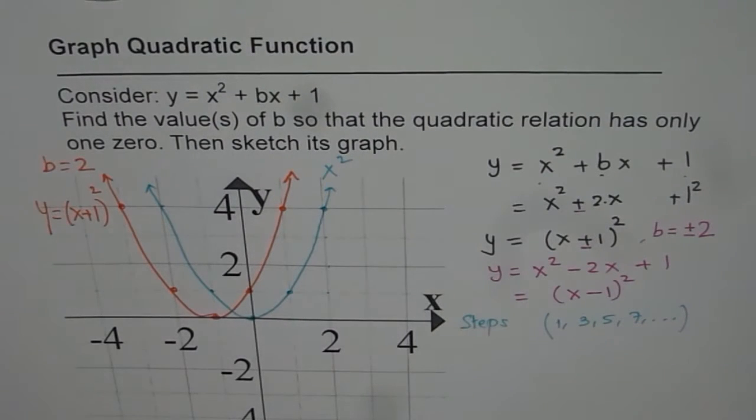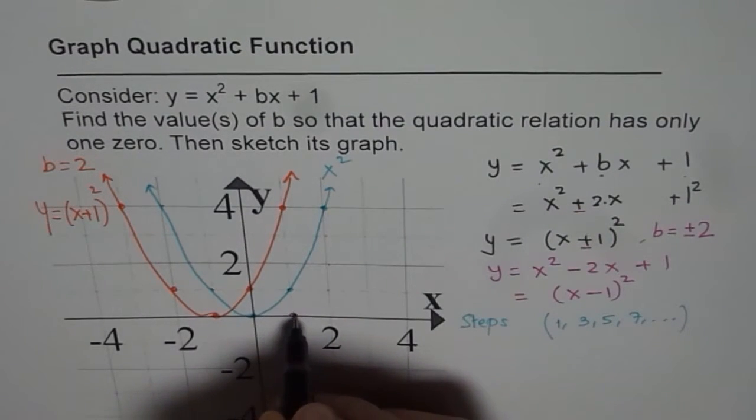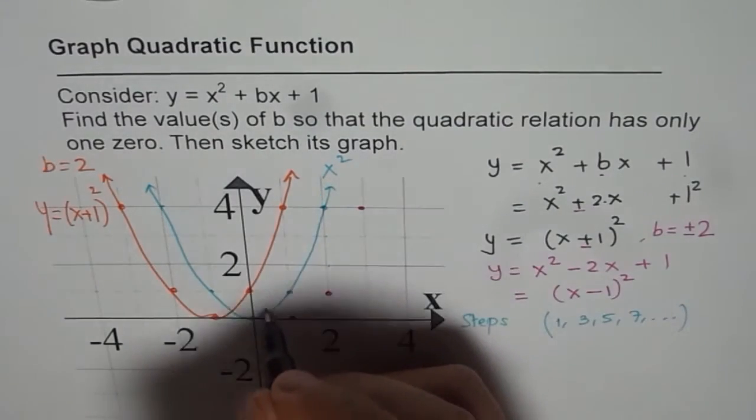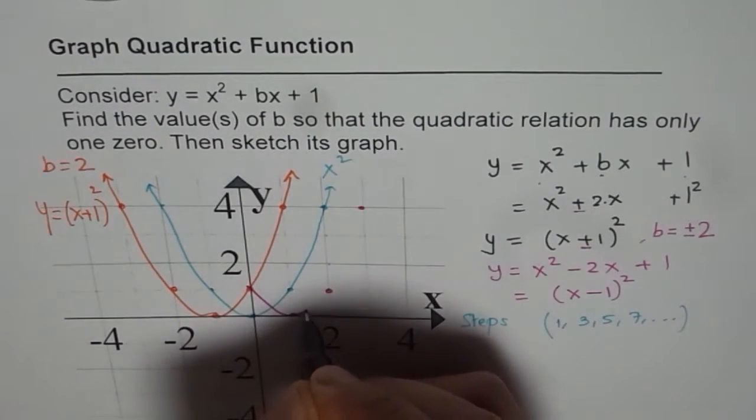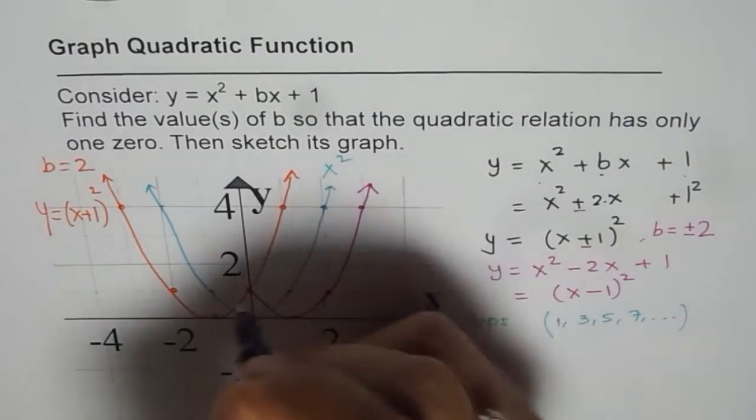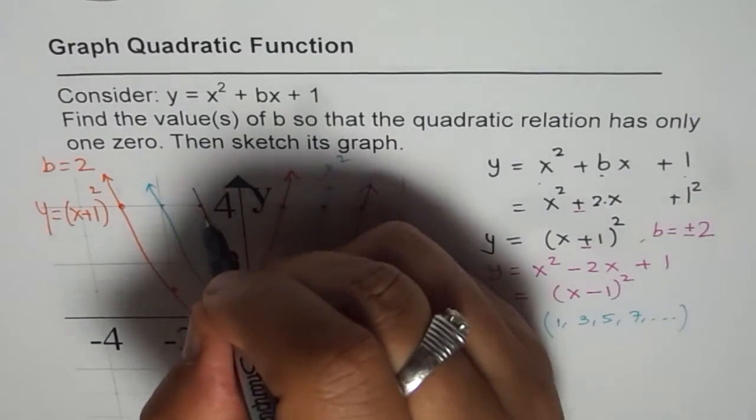Now if b is minus two, in that case the graph moves one unit to the right. So all these points move one unit to the right. And so we have something like this going on. So we are moving one unit to the right and joining these points.